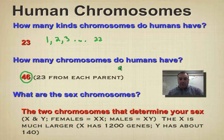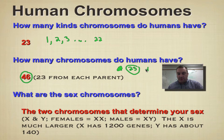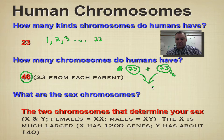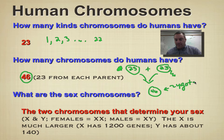All human egg cells that have been made correctly will have 23 chromosomes, and they're going to combine with a human sperm cell that will also have 23 chromosomes, and they will produce the zygote, which is the fertilized egg, which will have 46 chromosomes. The zygote is the very first cell that's going to develop into you.